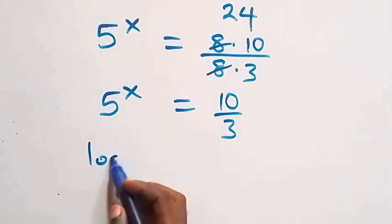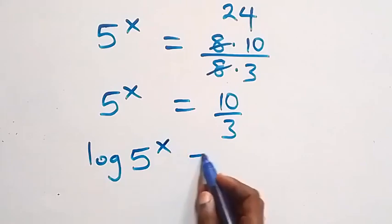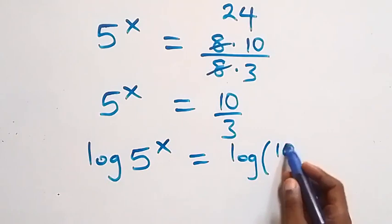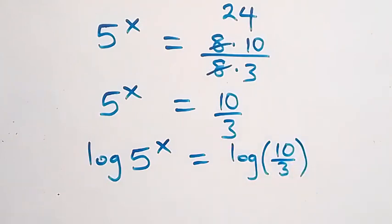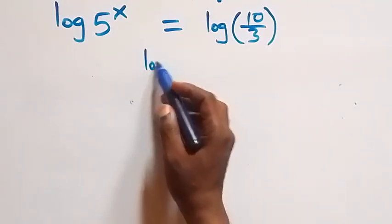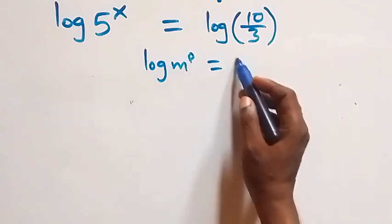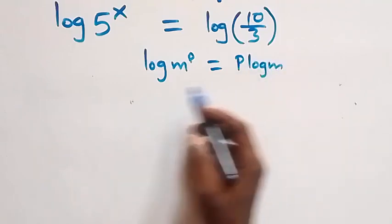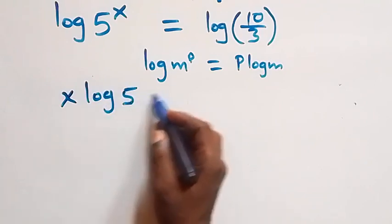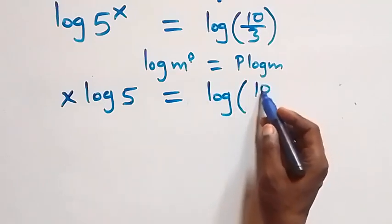That is, we have log of 5 raised to power x equals log of 10 over 3. From here we apply the power rule of logarithms: log of m raised to power p is the same as p times log m. So what we have becomes x times log 5 equals log of 10 over 3.